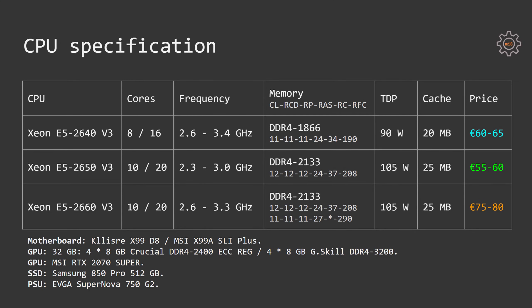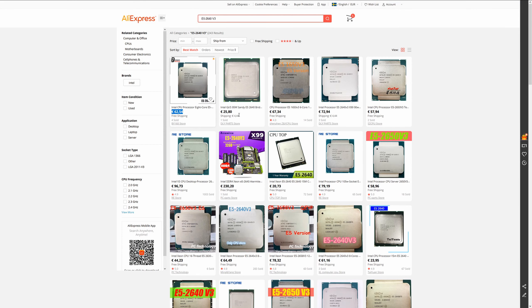Let's start with a specification comparison. Xeon E5 2640v3 is an eight core CPU with 16 threads. Its frequency fluctuates between 2.6 and 3.4 GHz, but if you unlock turbo boost, frequency on all cores will be 3.4 GHz. This CPU supports DDR4 1866 memory, has a 90 watt TDP limit, 20 megabytes of cache, and currently you can find it on AliExpress for 60 to 65 euros.